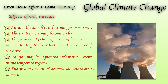The effect of increased carbon dioxide: the air and earth surface may grow warmer, increasing the temperature of the earth's surface, while the stratosphere may become cooler. Temperate and polar regions may become warmer, leading to a reduction in ice cover over the earth's surface. Rainfall may be higher than present in temperate regions, and there will be a greater amount of evaporation due to the excess warmth.